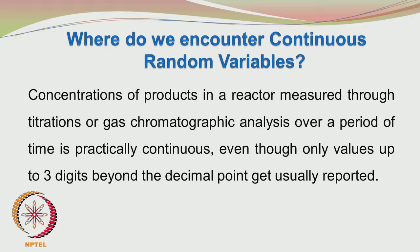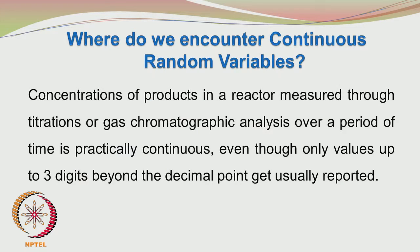Whenever there is a chemical reaction taking place in a reactor, the products of the reaction are measured using several analytical means. For example, you may use a gas chromatograph, an HPLC, or even simple titration methods to find the concentration of the products. The values can be practically continuous. Usually values beyond 3 digits after the decimal point are not reported; you give only up to 2 to 3 digits depending upon the accuracy of your instrument.